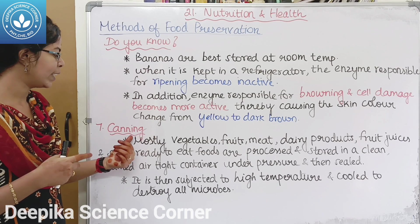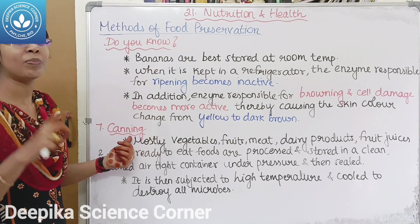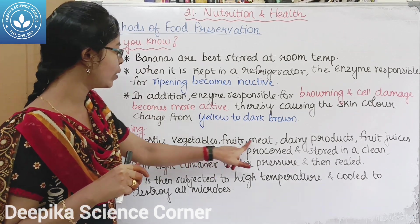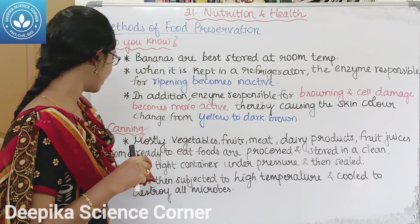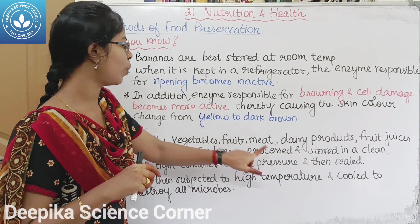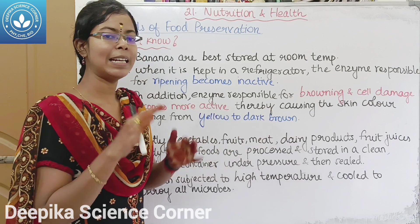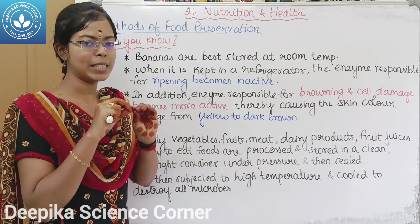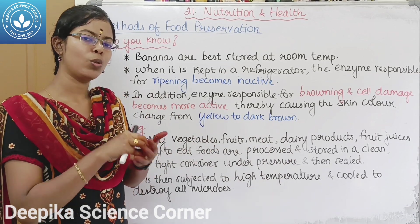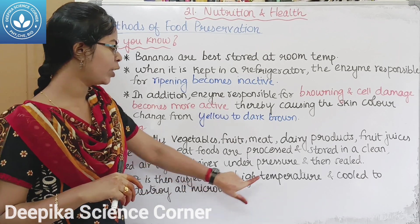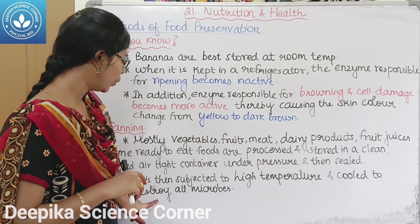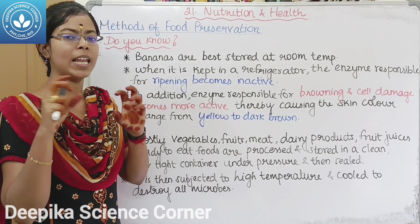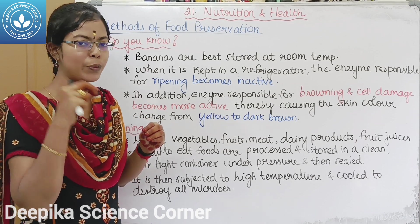The seventh preservation method is canning. Canning uses a tin or plastic container to preserve vegetables, fruits, meat, dairy products, fruit juices, and ready-to-eat foods. Food is stored in a steam-sealed container under pressure, subjected to high temperature, and then cooled to destroy all microbes. Examples include chips and packaged food items.